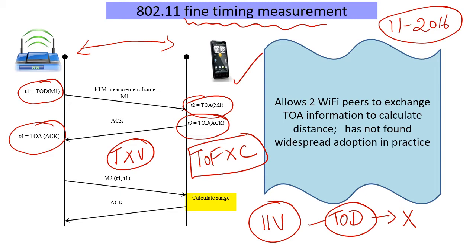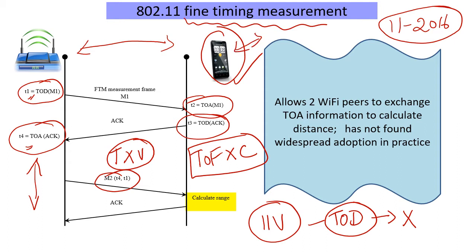In this example you can see that certain measurements are shared by the access point — when it received and when it originally sent — so the phone can calculate the distance. How it uses this information for various applications is left to the application layers. They can perform this process multiple times to average over measurements, and this need not be associated. Despite this flexibility and despite Google taking a big step forward, FTM has still not really become a mainstream thing.